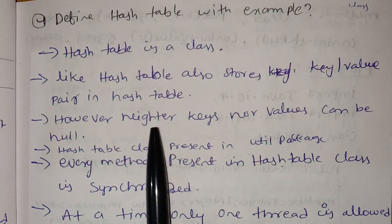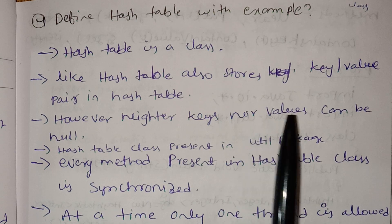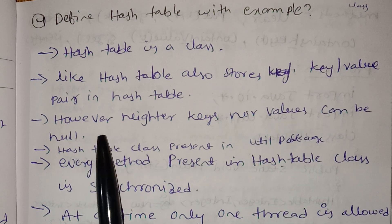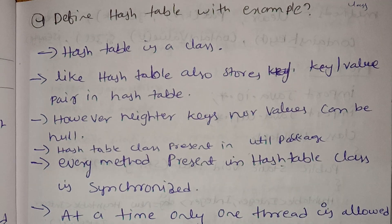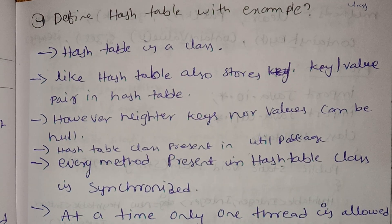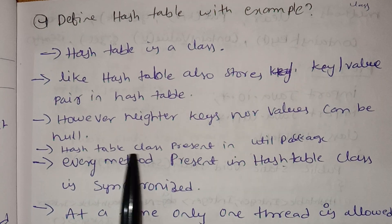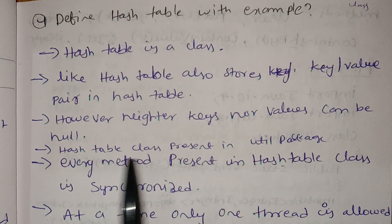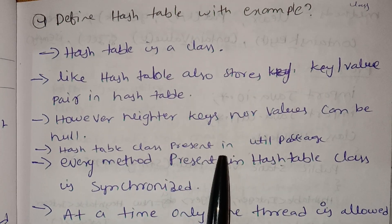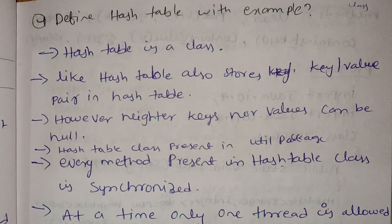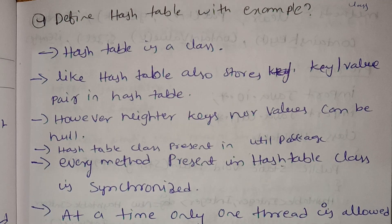However, neither keys nor values can be null. Keys and values cannot be null in a hash table.